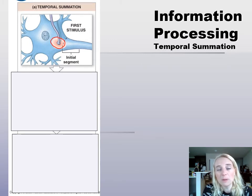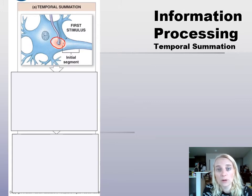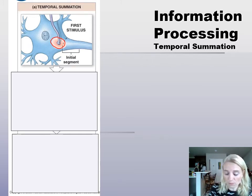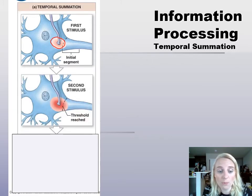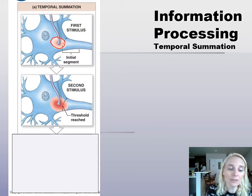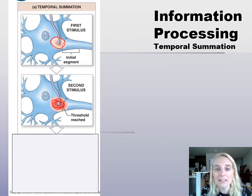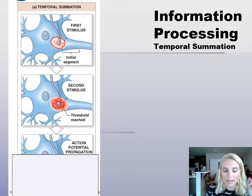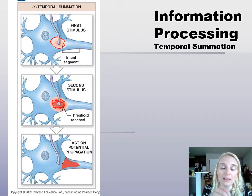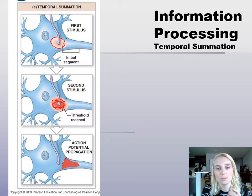That first stimulus all by itself maybe only depolarizes from negative 70 to negative 65. It was a depolarizing EPSP, but by itself it wasn't enough. But let's say another fired right afterward — right away, before the effects of the first one went away — and combined together, that added effect of the two graded potentials was enough to reach threshold, and so we get an action potential. It's the same spot, almost like a double click on your mouse: one click won't make the action happen, but two clicks back to back will. That's temporal summation.